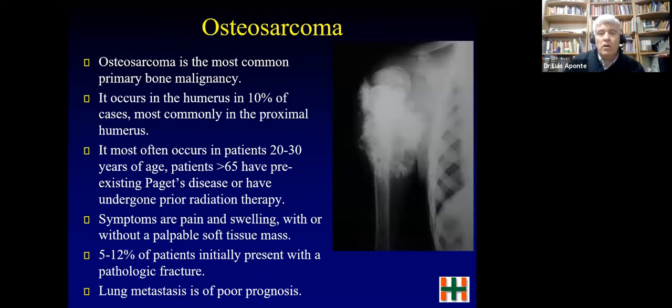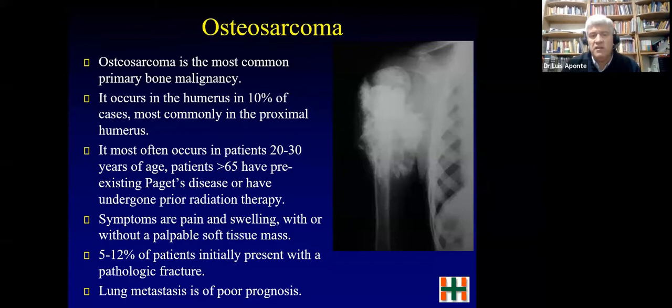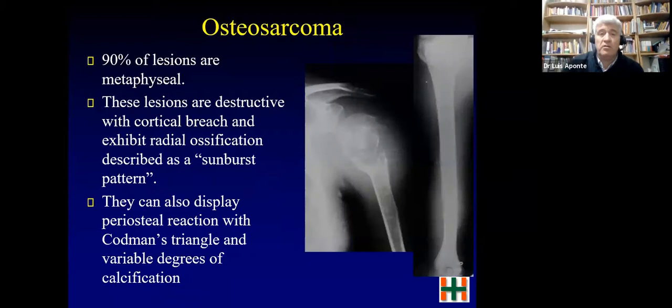Osteosarcoma is the most common primary bone malignancy. In the humerus it accounts for about 10% — more frequent than in the lower limb. It occurs mainly between 20 and 40 years of age. If it appears in older patients, consider underlying Paget's disease or prior radiation therapy. Patients present with pain and swelling, and some have a pathologic fracture as their presenting diagnosis. Lung metastasis carries a poor prognosis.